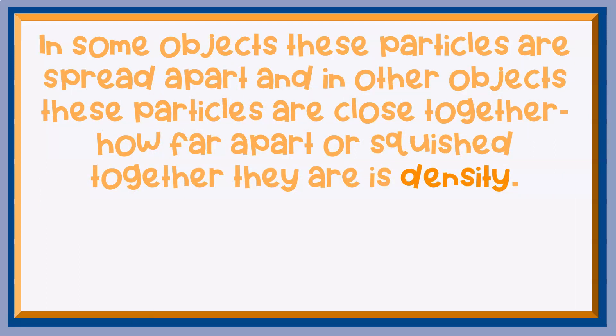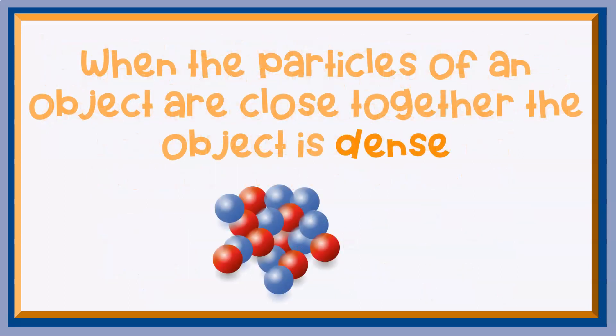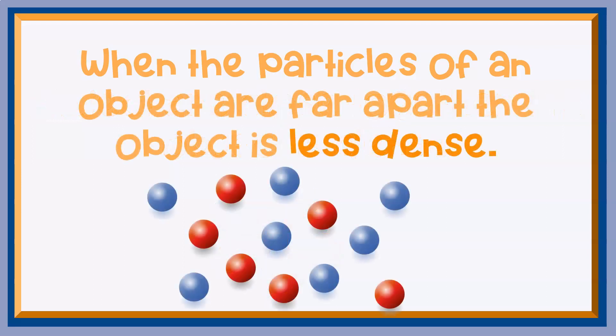In some objects, these particles are spread apart. And in other objects, these particles are close together. How far apart or squished together they are is density. When the particles of an object are close together, the object is dense. When the particles of an object are far apart, the object is less dense.